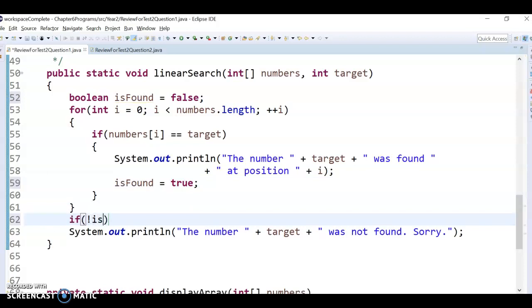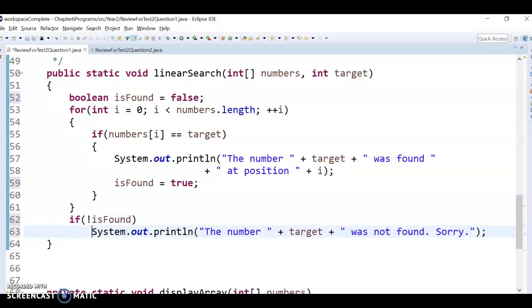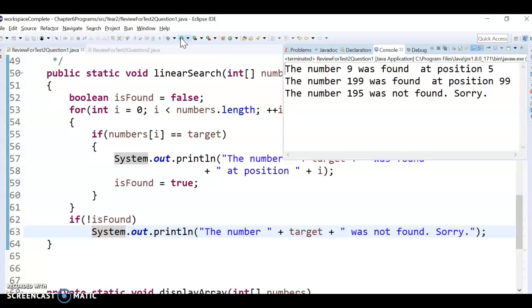And then we only run this if it's not found. So we could do if not is found, right? If that variable is false, then we want to print it out, okay? And that would probably, that would fix our issue, right? Then we get the messages that we want, okay?